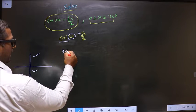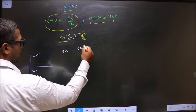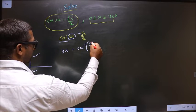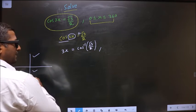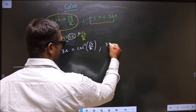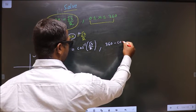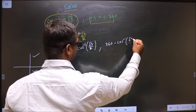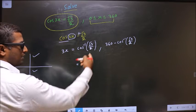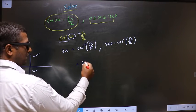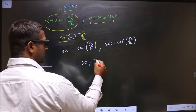To get an angle in the first we do directly cos inverse root 3 by 2. To get an angle in the fourth we should do 360 minus cos inverse root 3 by 2. Now calculate this you get 30 degrees. Calculate this you get 330.